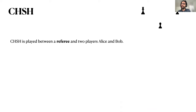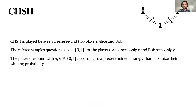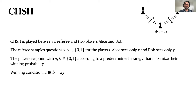We have a referee and two cooperating players, Alice and Bob. The referee samples questions X and Y for Alice and Bob respectively. Alice and Bob cannot communicate once the game starts, so Alice only sees question X and Bob only sees question Y. Once they receive these questions, Alice and Bob each respond with a bit as their answers. The winning condition is that the sum of their answers modulo 2 should be equal to the product of their questions. You don't have to wait till the end of the talk to ask questions — you can pause me at any time.